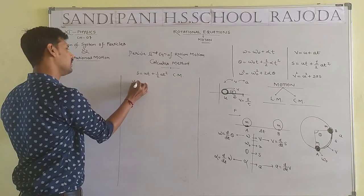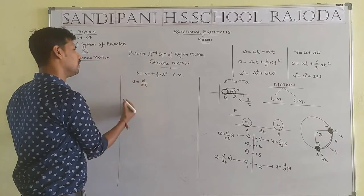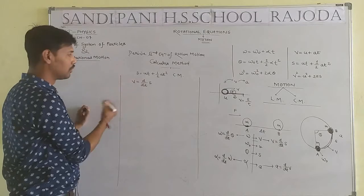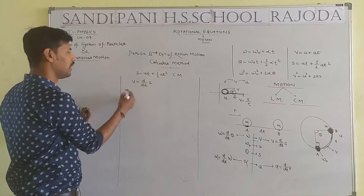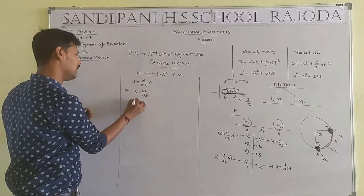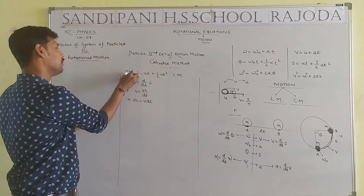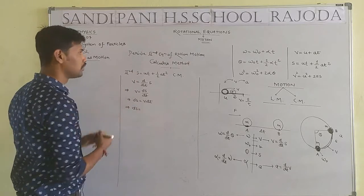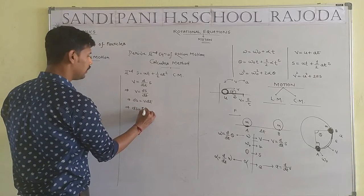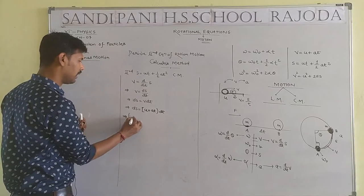We start with the simple definition: velocity is the rate of change in displacement. So, v = dS/dt. By cross multiplication, we get dS = v·dt. This is the starting point for deriving the second equation of motion. By the first equation of motion, v = u + at, so we substitute: dS = (u + at)·dt.